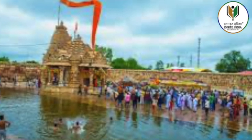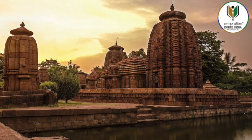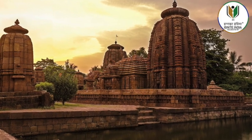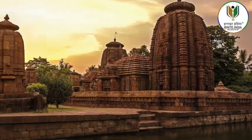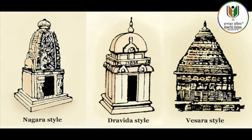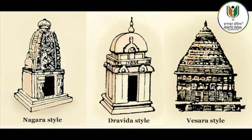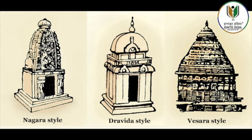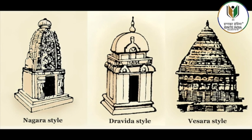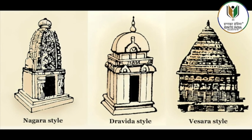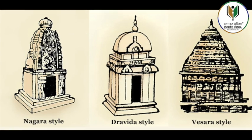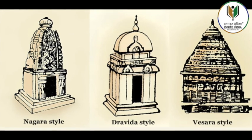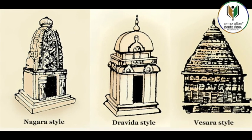Eastern Indian temples include those found in the northeast, Bengal and Odisha. It appears that terracotta was the main medium of construction and also for moulding plaques which depicted Buddhist and Hindu deities in Bengal until the 7th century.